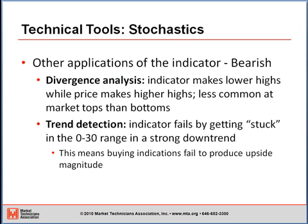Other applications of the stochastic for bearish trading include divergence analysis — the indicator making a lower high while price makes a higher high. That is much less common at market tops because of the nature of market tops. Remember, bottoms are formed on panic and tops are formed on complacency, so momentum at a bottom has different characteristics than at a top. The indicator also fails by getting stuck in the 0 to 30 range in a strong downtrend, meaning buying indications fail to produce upside magnitude. It's sometimes very important the signal an indicator gives when it fails rather than when it succeeds.